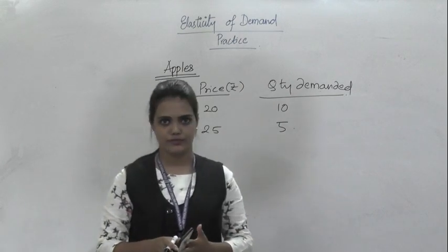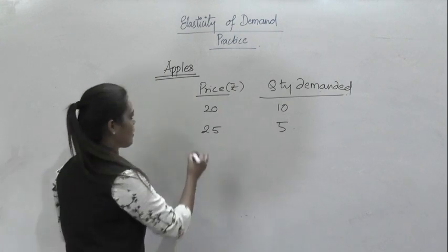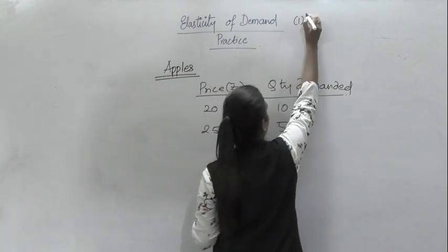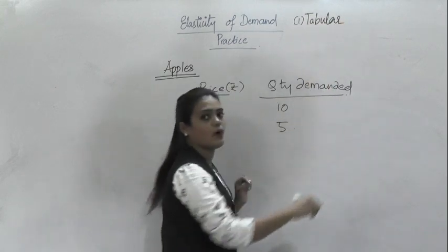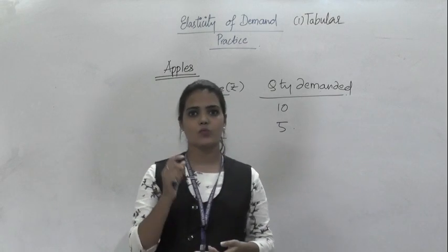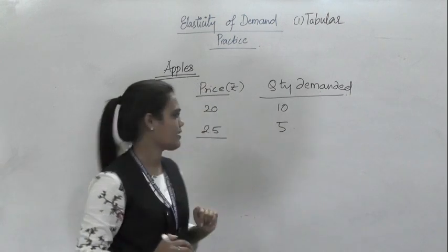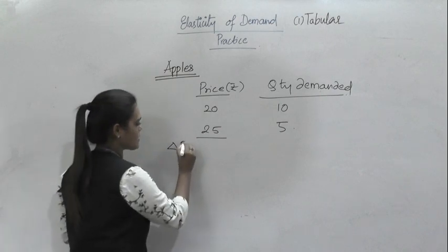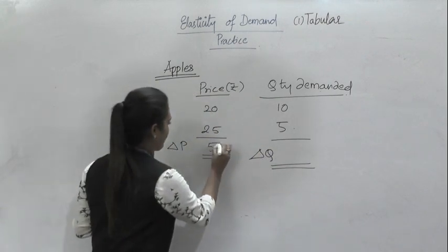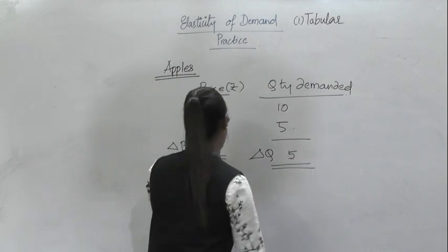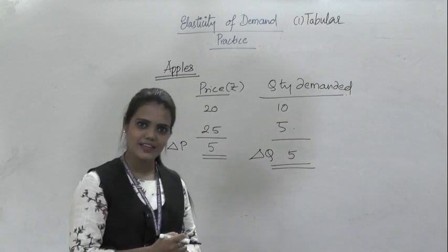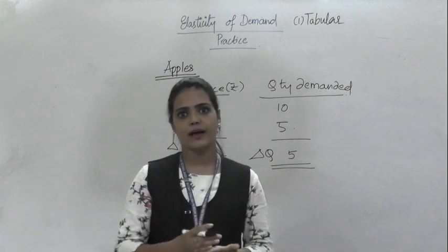Now you have to calculate the elasticity of demand coefficient. When you talk about price and quantity demanded in any price elasticity question, the first trick is to put it in a tabular form. The most important element is to understand the change in price and the change in quantity demanded. We denote these as delta p and delta q. Delta p is 5 and delta q is also 5. Do not jump to conclusions — we will always go by steps.